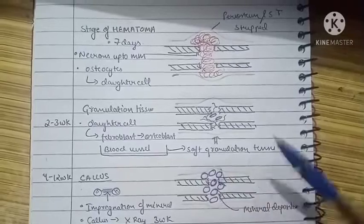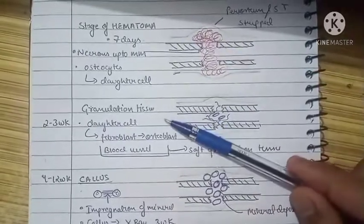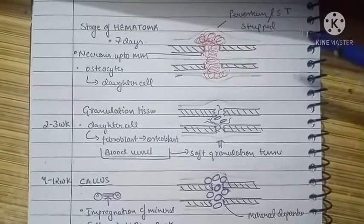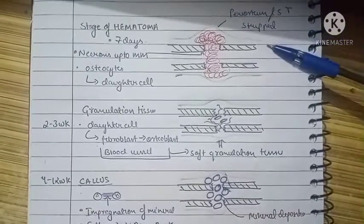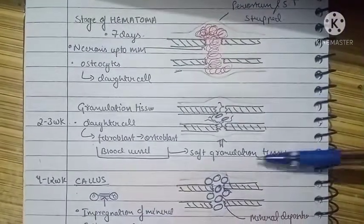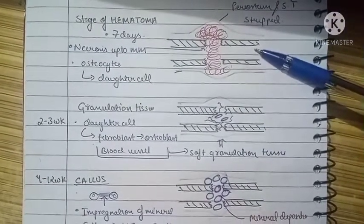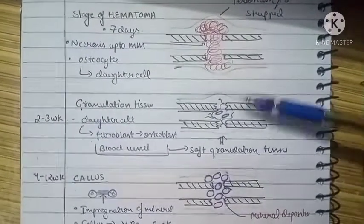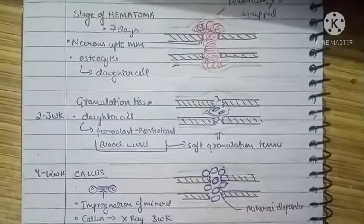We have two stages: stage of hematoma and stage of granulation tissue. Till here, the stages of healing are similar in the case of wound in our skin and bone. After this, in the case of skin we have formation of fibrous tissue, whereas in the case of bone we have formation of mineralized mesenchymal tissue, that is our callus.